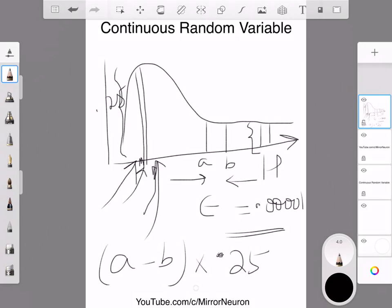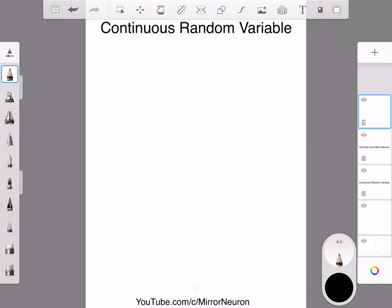So that means 0.25 times a small amount is the probability of getting this height here. So that way we can calculate the probability of each and every value there, but overall we should keep in mind that the entire area, the probability of the entire area, is actually one.